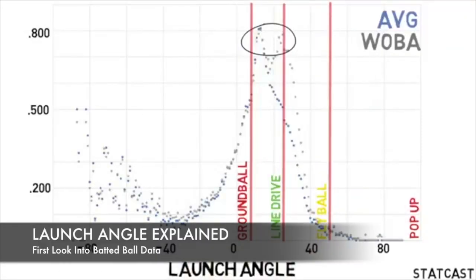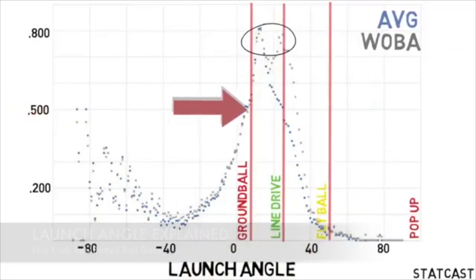And if you look even closer, you may notice that line drives produce an average batting average and wOBA of above 500 and up to 800 in each of those metrics.